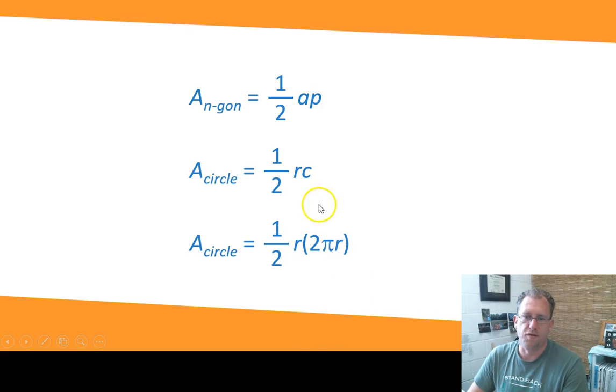This isn't the normal area of a circle formula that you're used to, but it would also work, because the apothem of a circle is its radius, and the perimeter of a circle is its circumference. If you were to substitute in the formula for the circumference of a circle, which is 2πr, into that equation, one-half times r times 2πr, let's combine like terms and simplify here. One-half times 2 cancel each other out.